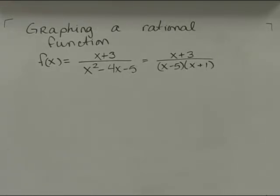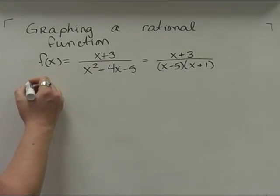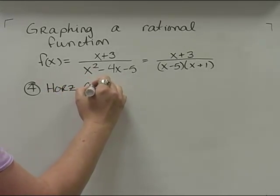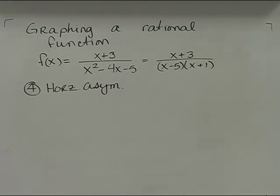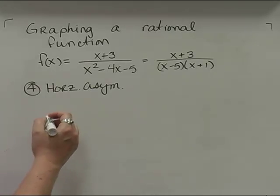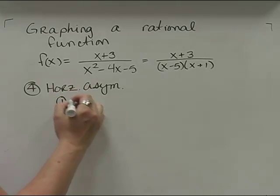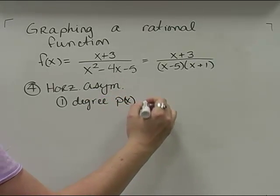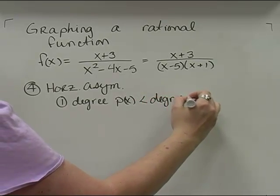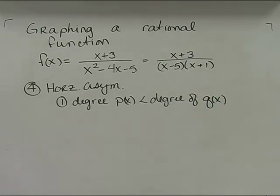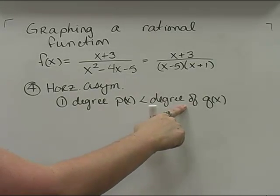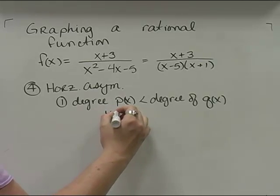The next thing we're going to do is look at our horizontal asymptotes. To find horizontal asymptotes, we need to compare the degrees of our numerator and our denominator. There are three cases. The first case is that the degree of p of x is less than the degree of q of x. If that happens, then we're going to have a horizontal asymptote at y equals 0.